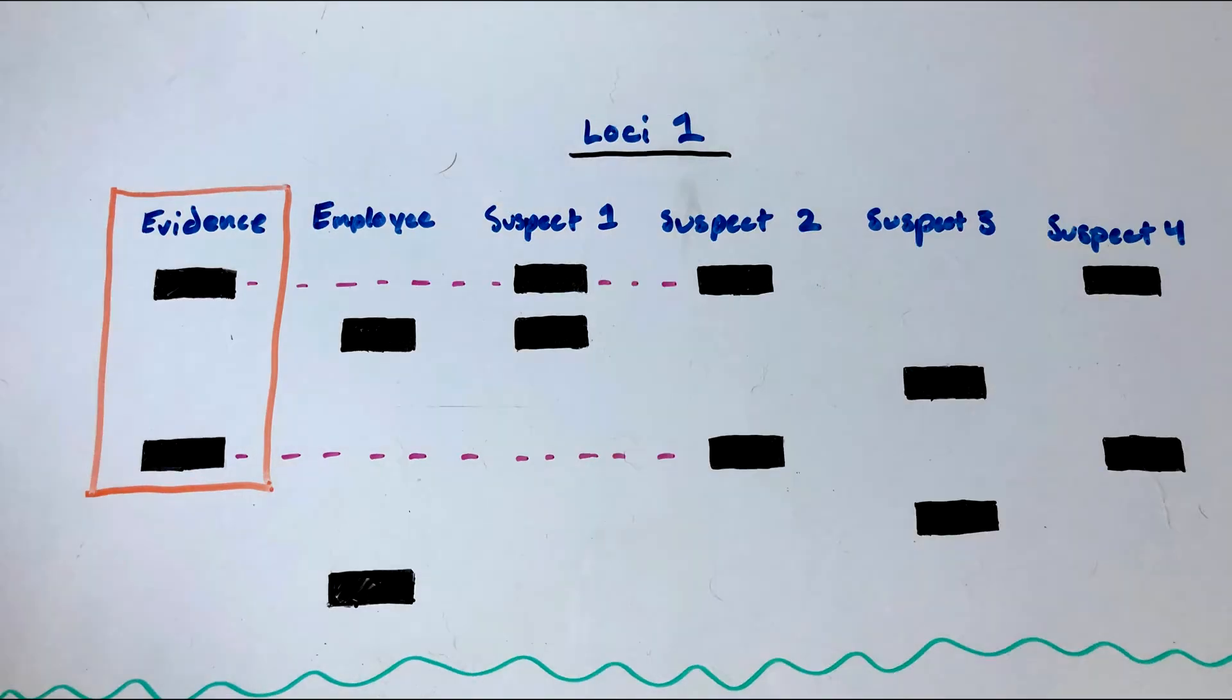The bars of suspect 2 are in the exact same position as the evidence bars, so it is possible that they were the one who left the DNA sample.